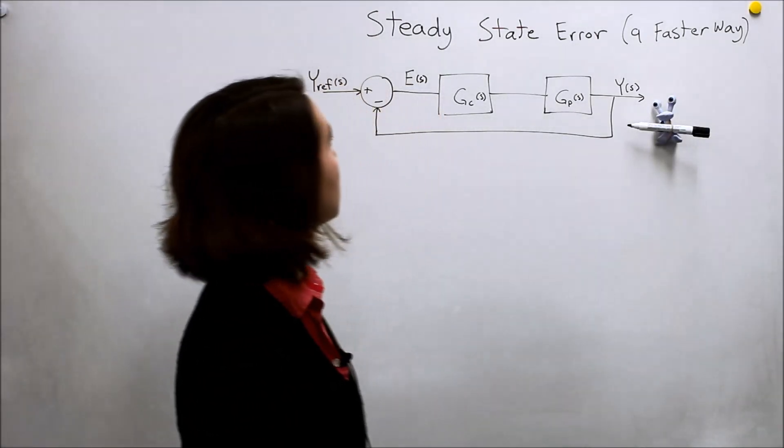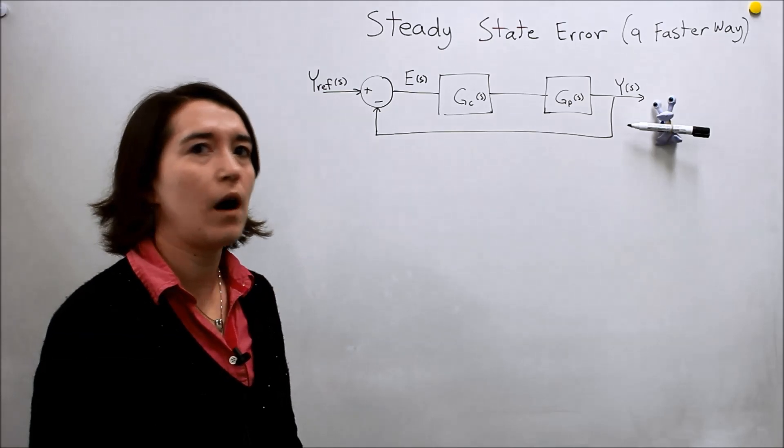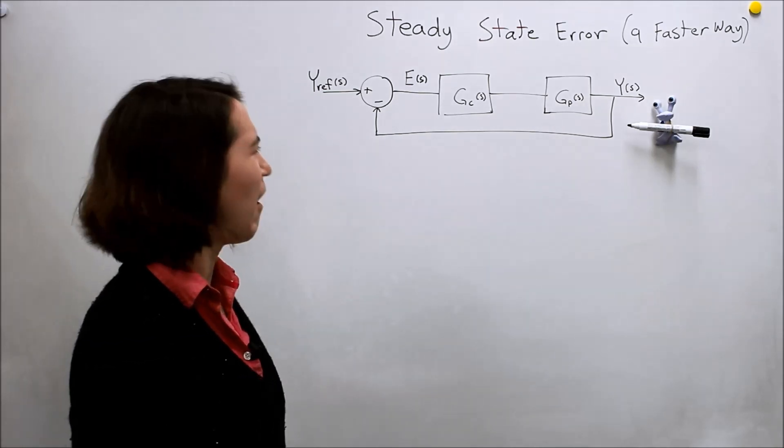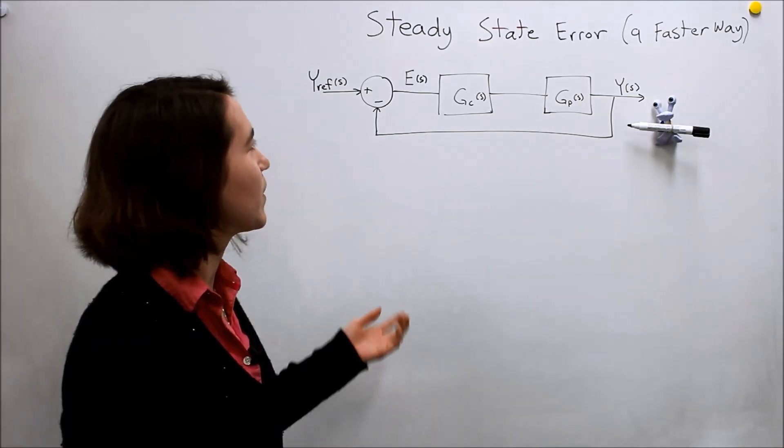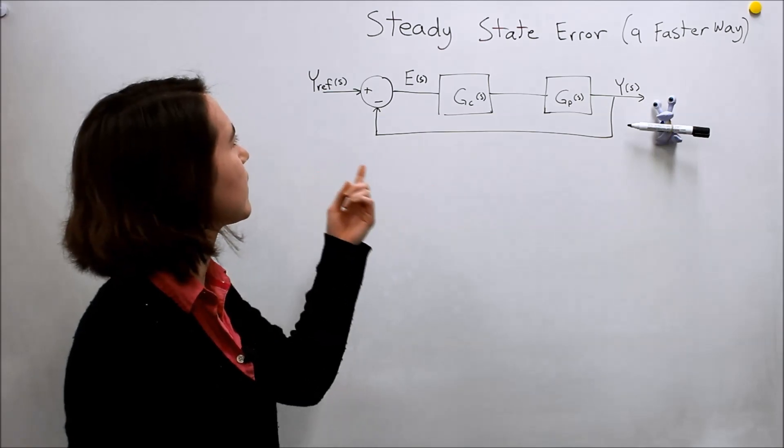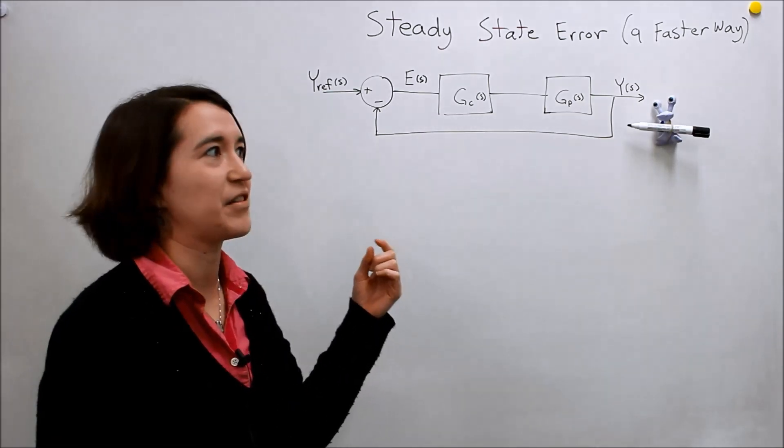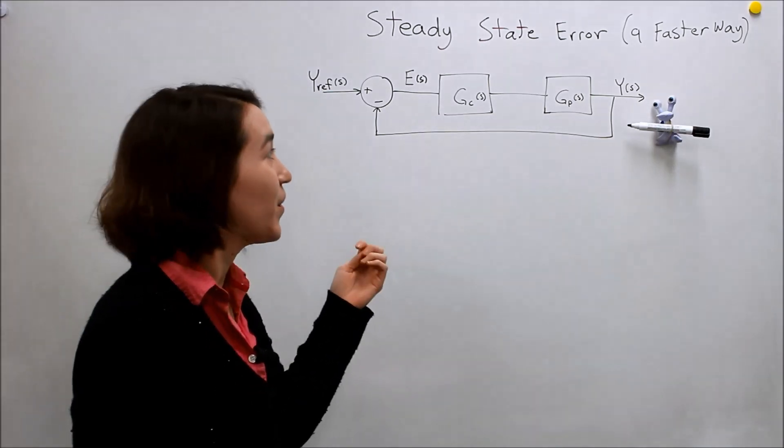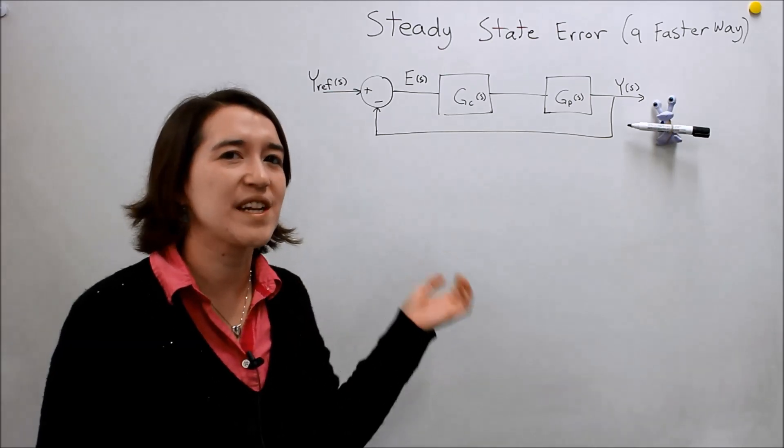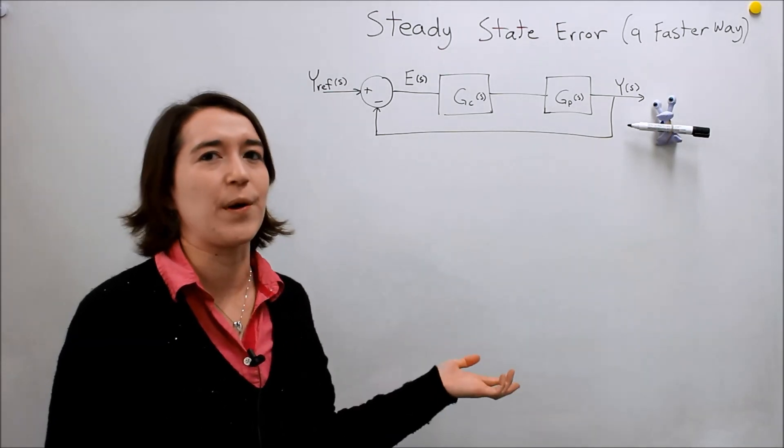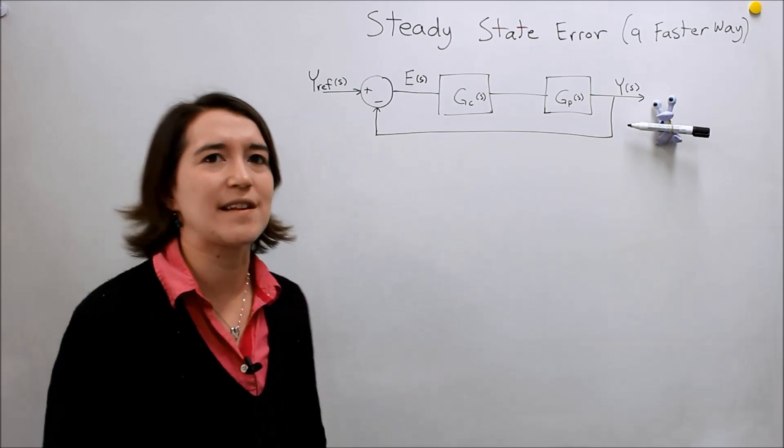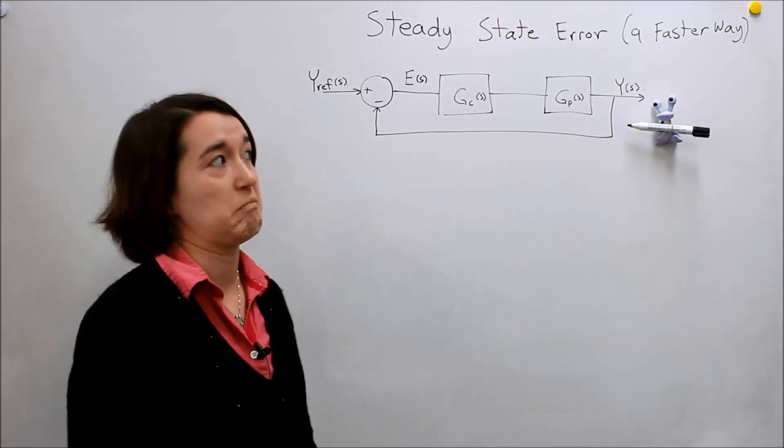Oh hey Valerie. Whatcha doing? Oh, are you making a video without me? Because you found a faster way to do the steady state error? Oh, I should have thought about that, huh? She says that we need to use the final value theorem and we can figure out the steady state error faster. So let's try that.